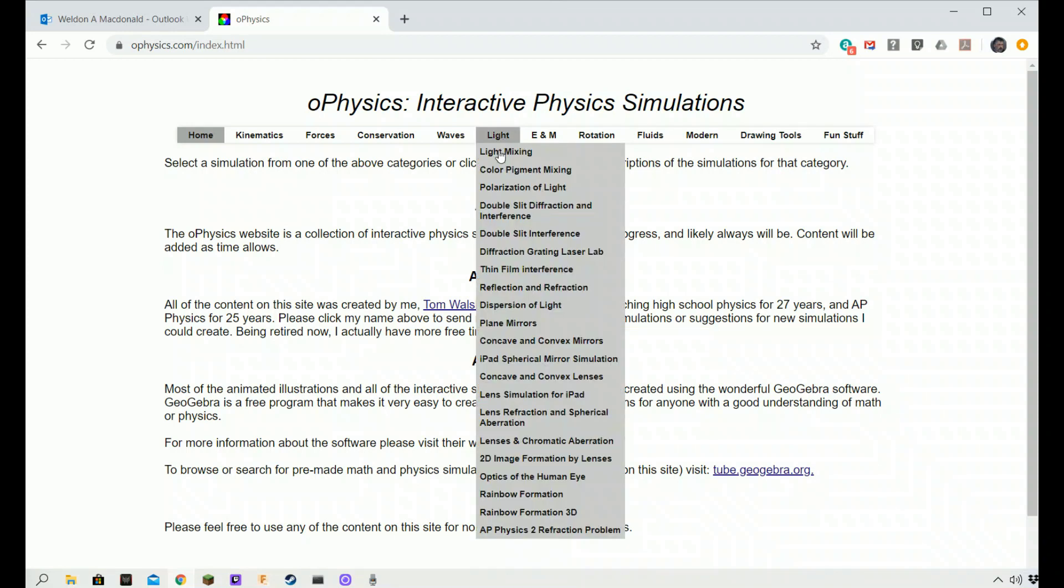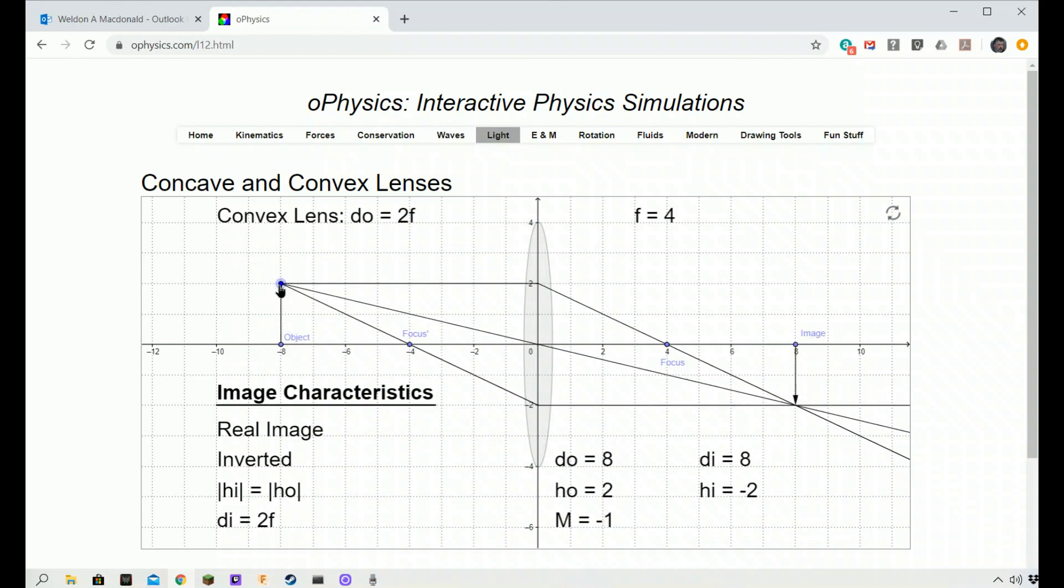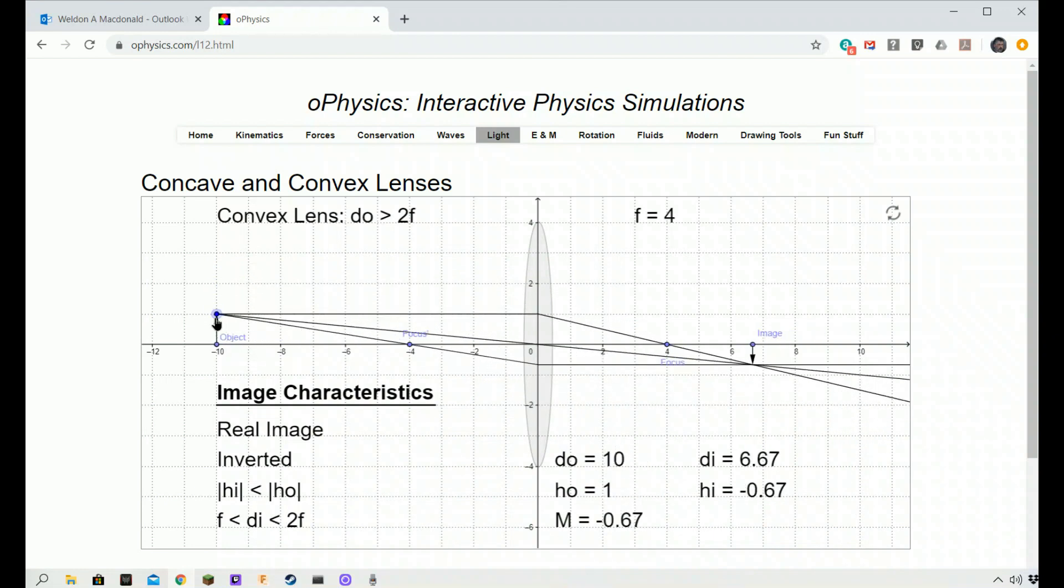From there, you go to lights. Scan down until you get to Concave and Convex lenses. And you get this. F is four. I think that's what I used. I'm not sure what I used for H. But you can change the object like this. Drag it down to the height. Drag it this way.